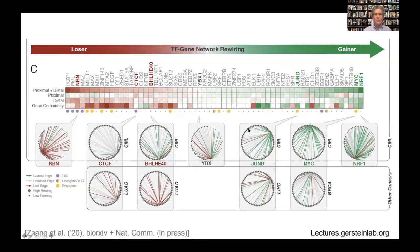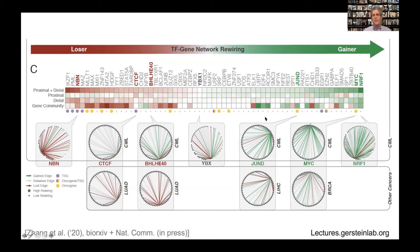Here's what we find when we look at the GM12878-to-K562 transition. We have all the different transcription factors, and for instance, looking at MYC, we can see the edges that are gained in cancer — this is a model for CML, chronic myelogenous leukemia. Lots of edges are gained, very few are lost. Conversely, NBN is a factor where it loses a lot of connections. We can sort all factors by how much they gain or lose edges, and more usefully, sort them by gene communities to understand which factors are associated with the change in oncogenesis.